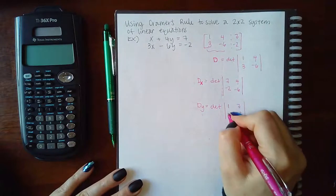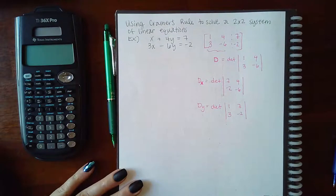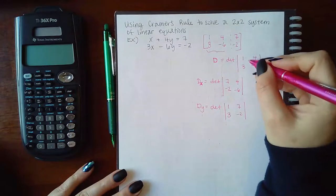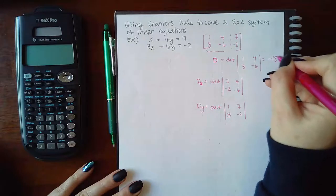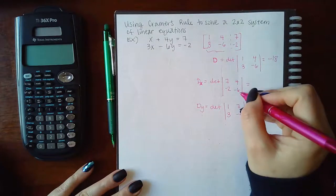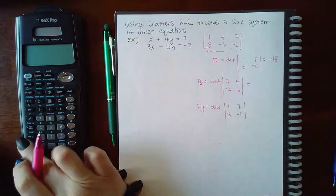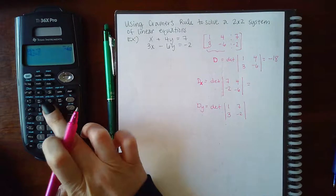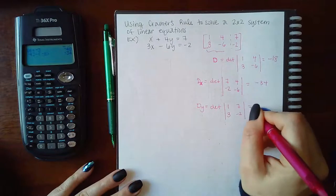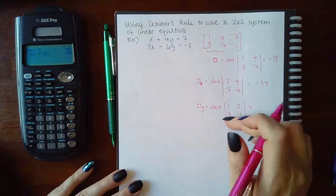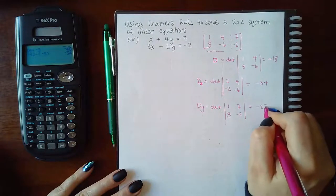But the X column should stay the same X coefficients, 1 and 3. And so then if I figure out these determinants, that's going to be negative 6 minus 12, which is negative 18. Negative 42 minus a negative 8 is negative 34. And then negative 2 minus 21 is negative 23.